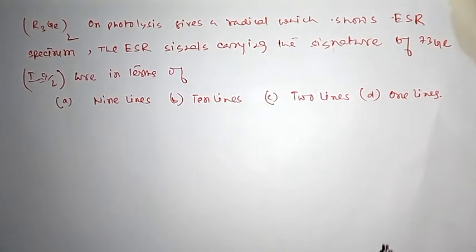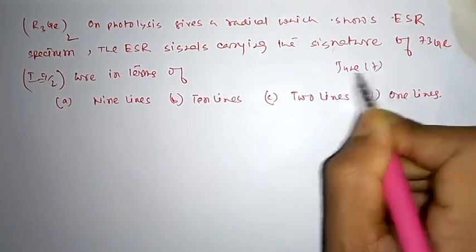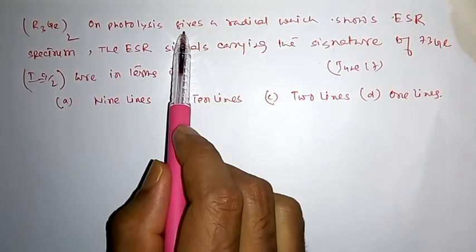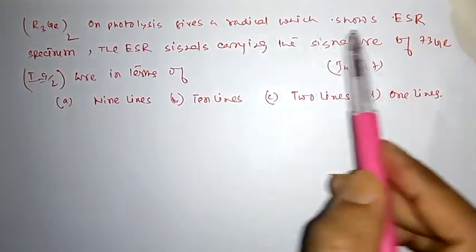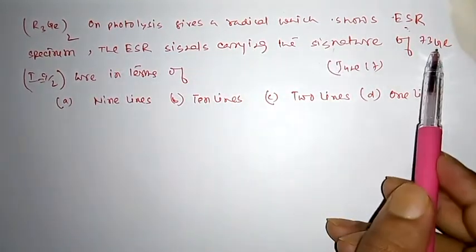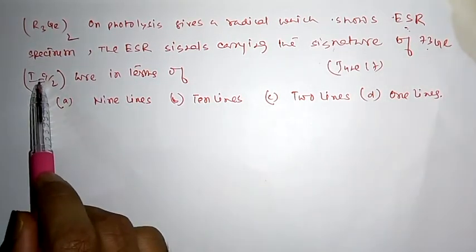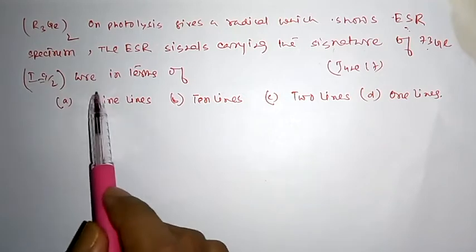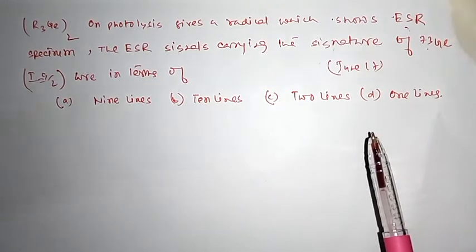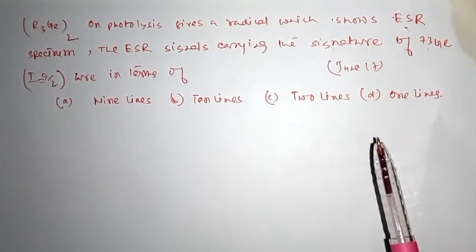Hello guys, this question is from CSIR NET June 2017. The question states that a species undergoes photolysis and gives a radical. The ESR spectrum, the ESR signals carrying the signature of 73 germanium with nuclear spin quantum number 9/2, are in terms of nine lines, ten lines, two lines, and one line.